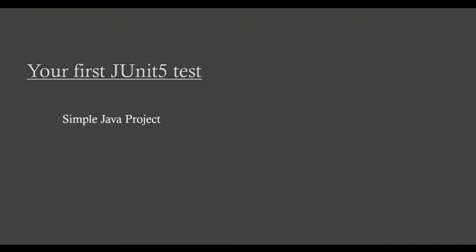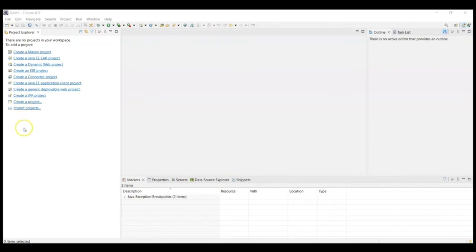Welcome back. In this section, you will create your first JUnit 5 test case. There are multiple ways you can create a project to write tests. The first and the simplest is by creating a Java project in Eclipse — you can give it a name like JUnit tests and start creating test cases under it. The second way is the more standard way using a build tool like Maven or Gradle, which is used in a majority of enterprises. In the next lecture, you will see the simpler version of it. However, for the rest of the course, you will use Maven as the build tool.